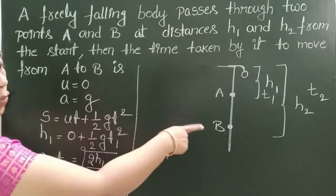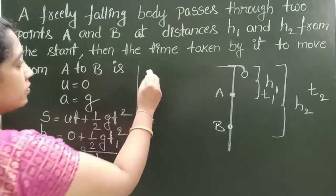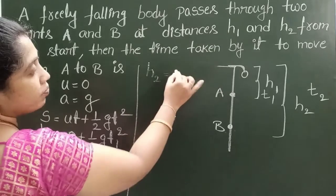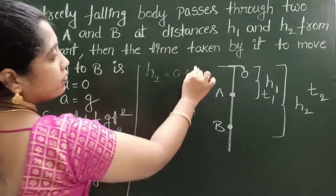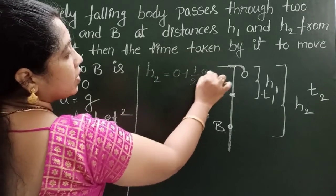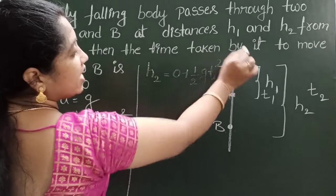Next, from starting point to B point, H2 equals initial velocity 0 plus half g T2 squared.